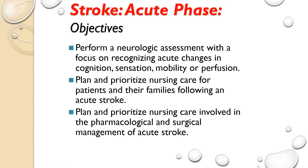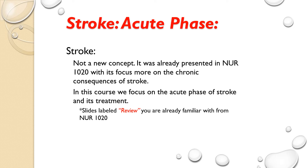So the acute phase. Stroke isn't new — you learned this in 1020. We looked at the more chronic consequences of stroke, like making sure the call light isn't on the wrong side and keeping track of mobility and ADLs. Now we're going to look at what happens right now — like they just had a stroke yesterday. How do we care for those patients in a critical care environment? We're really going to focus on the acute phase.